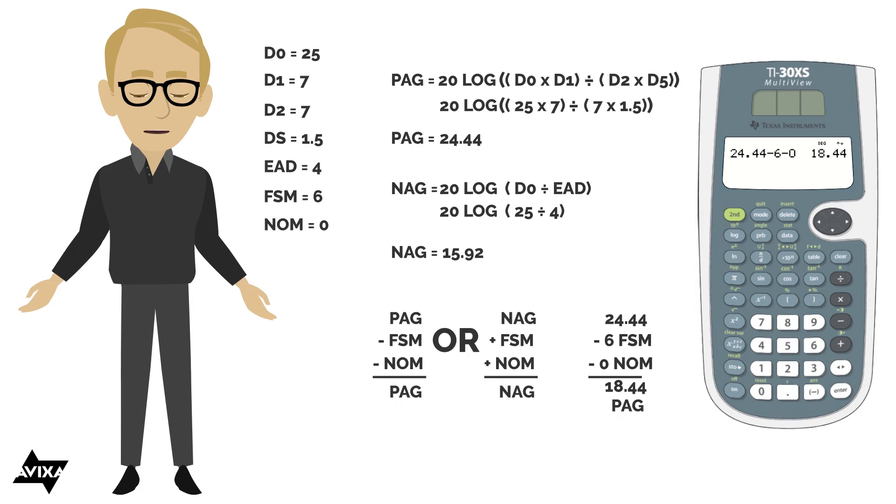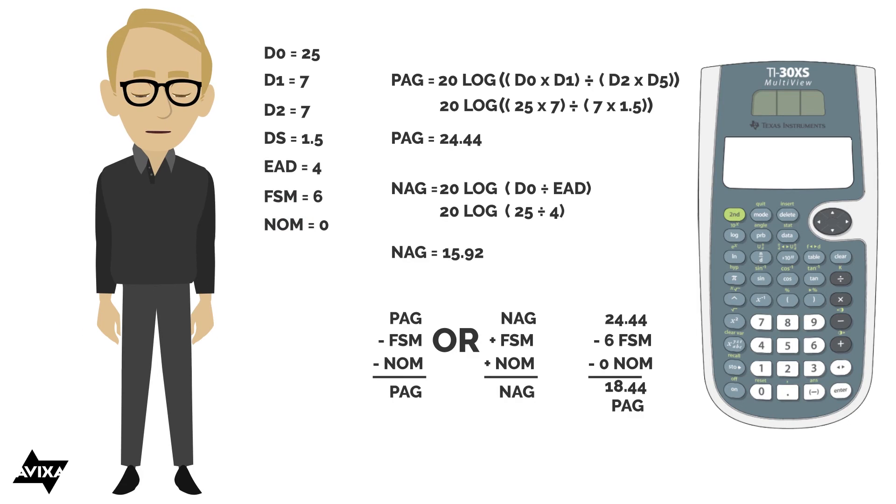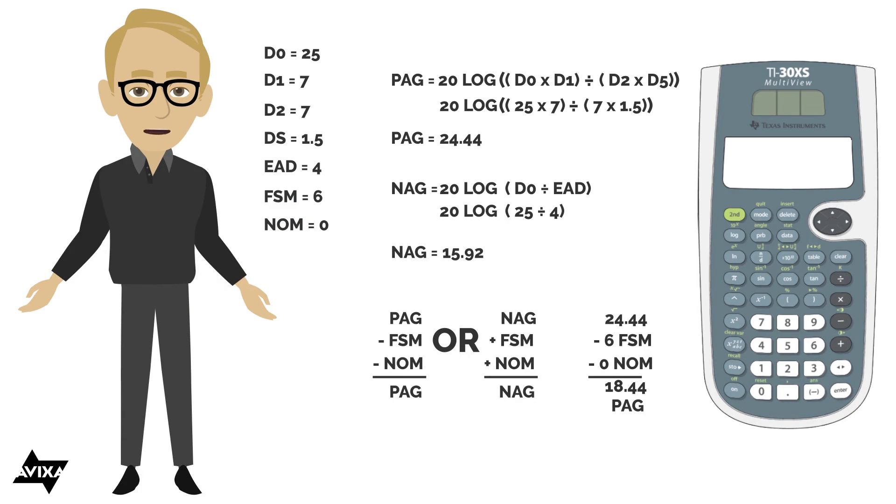So let's take away the 24.44 minus 6 FSM and then minus 0. So we end up with a final PAG of 18.44. We're going to compare that against the NAG of 15.92. This is in decibels. So my PAG, after subtracting for FSM and NOM, I come up with 18.44. I'm going to compare that against my NAG of 15.92. Do I have more PAG than I do NAG? Yes, I can go ahead and build the system. And that's how you would work out PAG and NAG calculations.